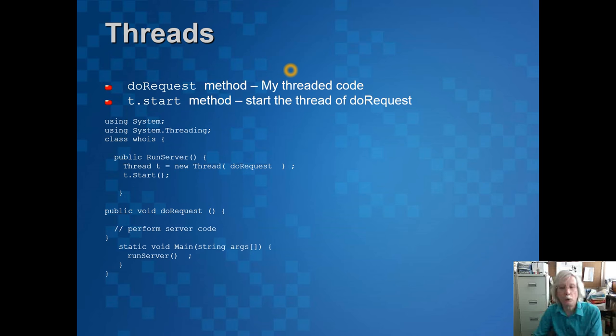Let's look at the coding for writing threads in C#. Here's some example code using the System and System.Threading class library. We've got our code for our Whois server and in there we've got our runServer method that will call the doRequest method. The main program starts by calling the runServer method. That's what we had before in a single threaded one. But now in runServer, if we want to handle requests concurrently, we can create a new thread called t and we say that thread contains a copy of the doRequest code.